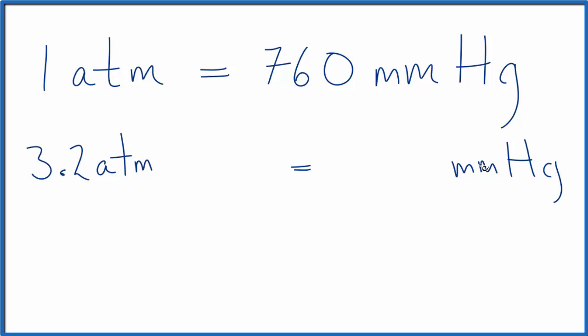I can multiply by a conversion factor. There are 760 millimeters of mercury in one atmosphere. So we're going to multiply—when we multiply 3.2 atmospheres by 760 millimeters of mercury per 1 atmosphere.